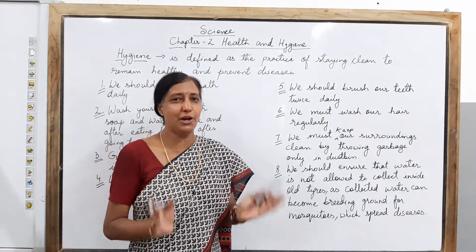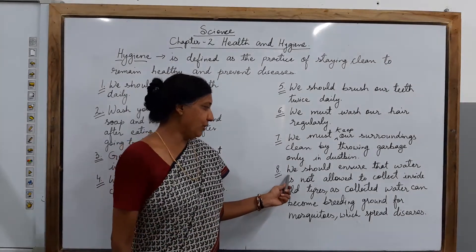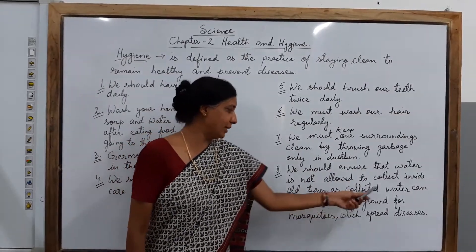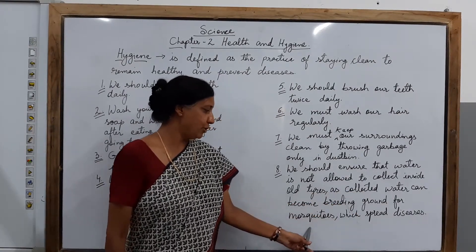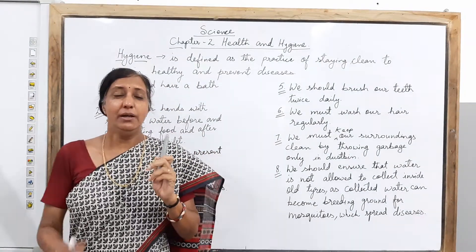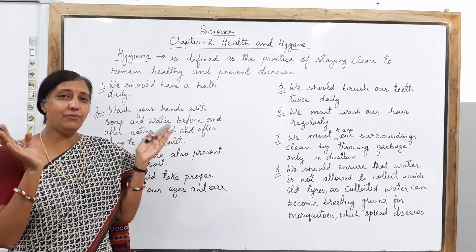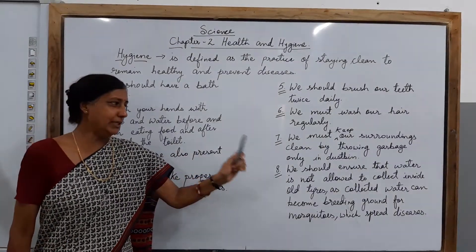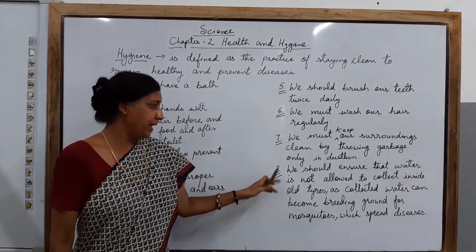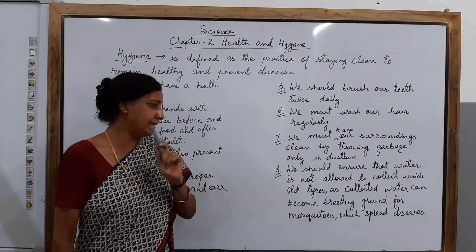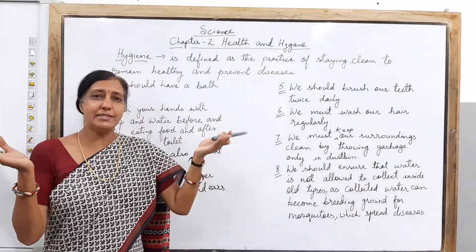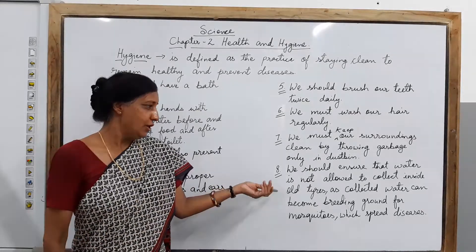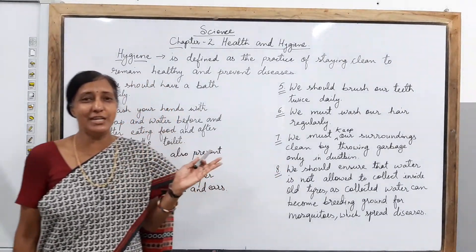Then, children, we should ensure that water is not allowed to collect inside old tires. Collected water can become a breeding ground for mosquitoes, which spread diseases. As you know, mosquitoes breed in areas where water is stagnant and collected at one place. So you should see to it that water is never stagnant — it is always moving. At times old tires are around and water just stays there for long, and then mosquitoes come. So do not allow mosquitoes to breed and spread any kind of disease around you.